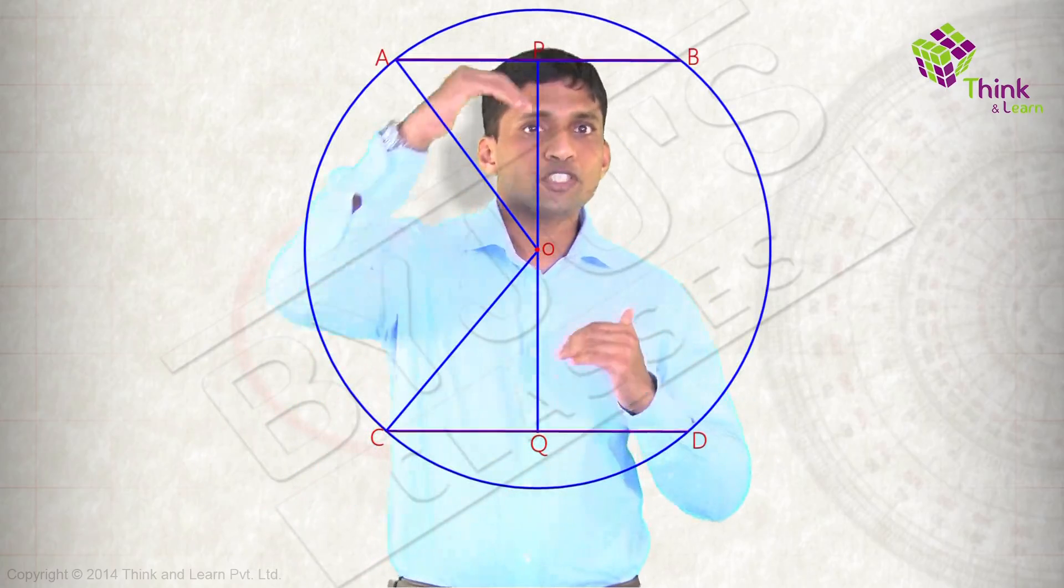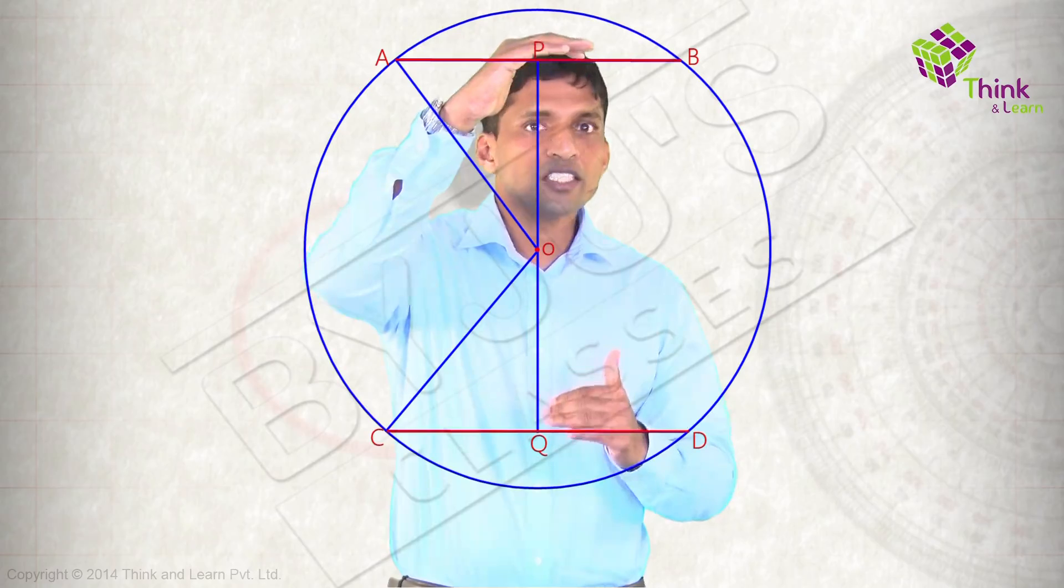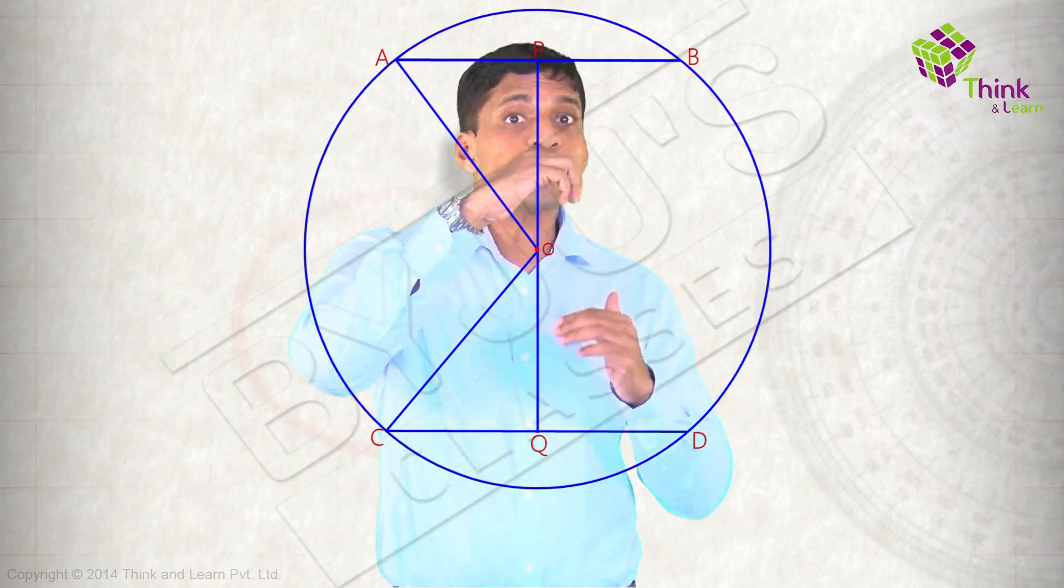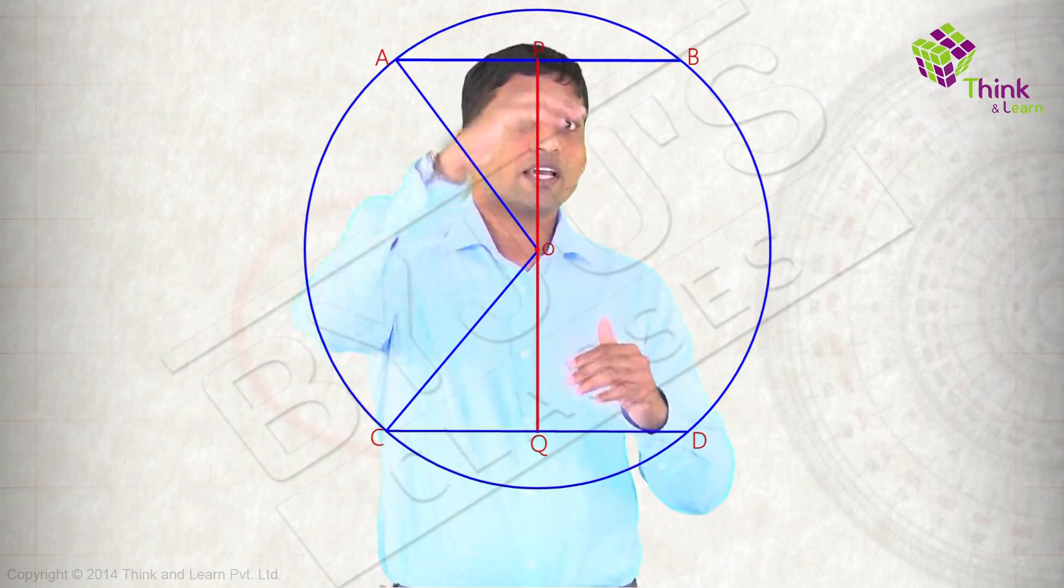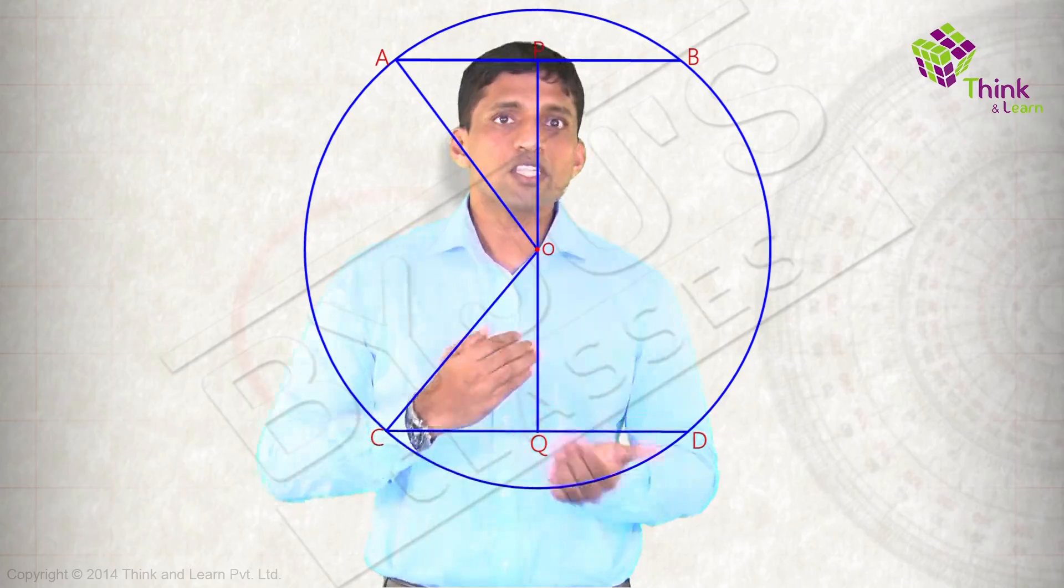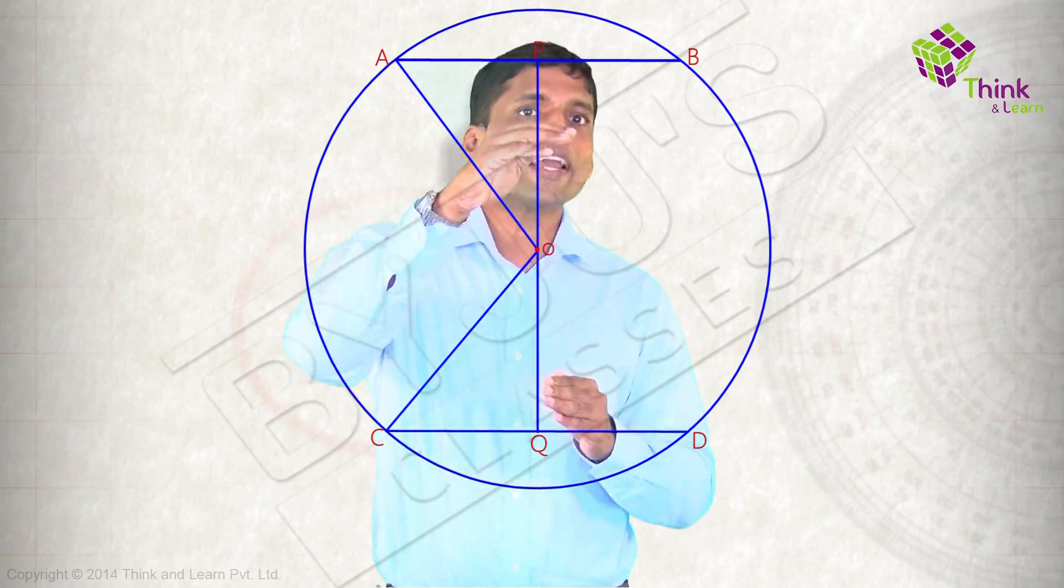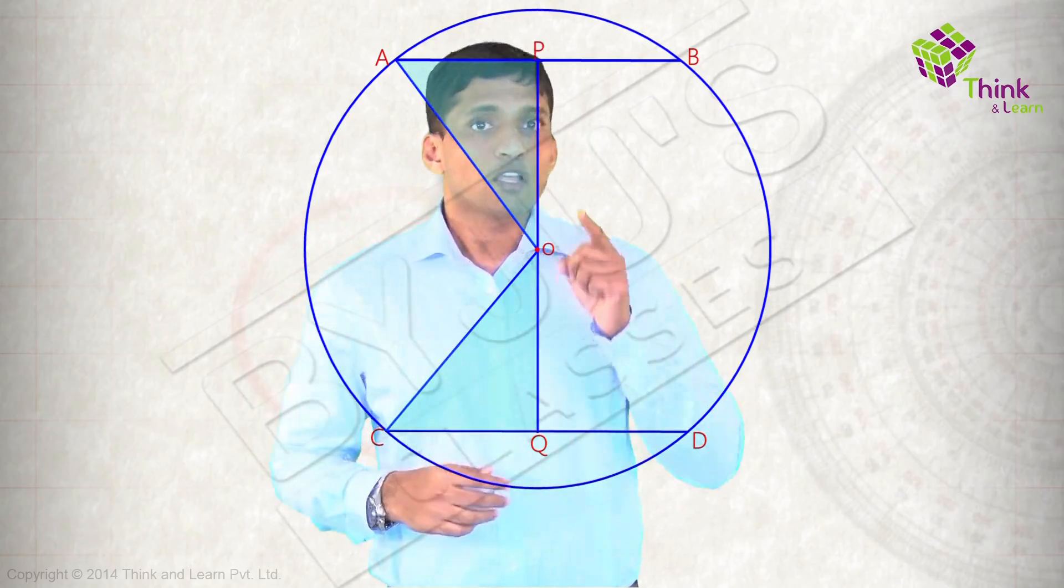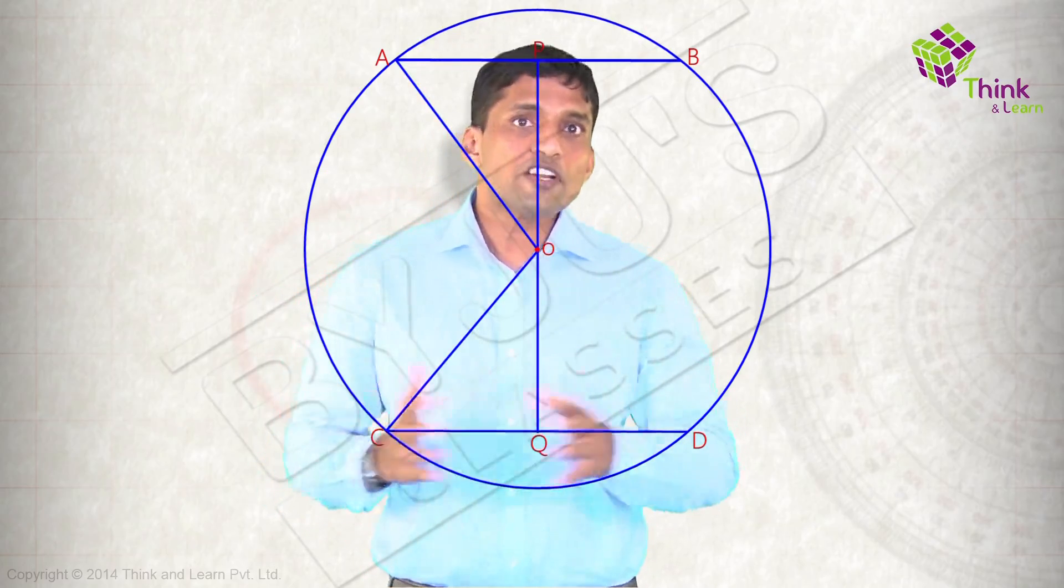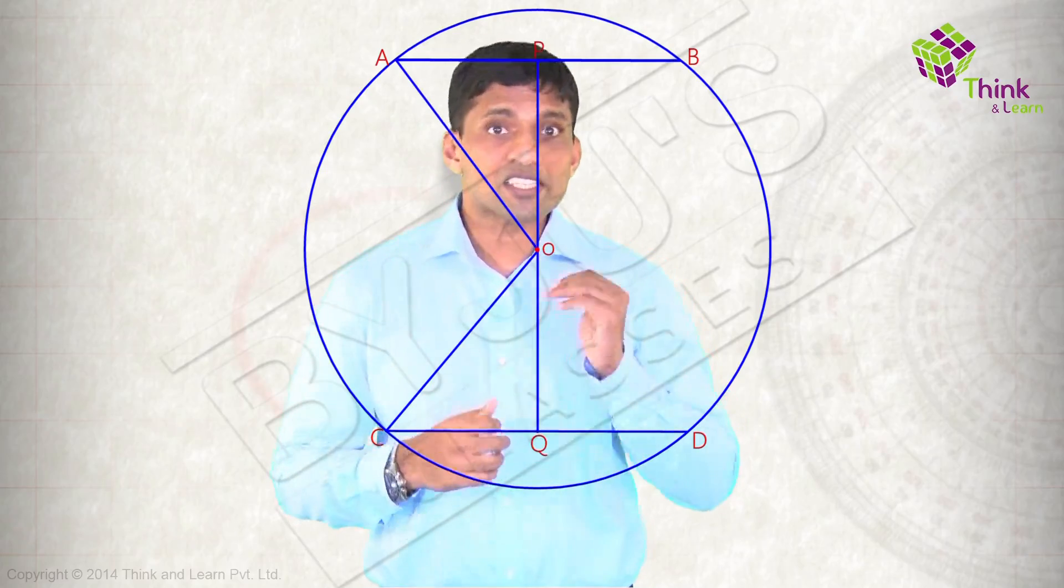Let's see the next one. If I consider these two chords, equal chords are equidistant from the center. The converse is, if they are equidistant, then these chords are equal. Both these theorems are proved by using these two triangles being congruent. Which rule is used? RHS rule is used. So we have discussed six theorems by now.